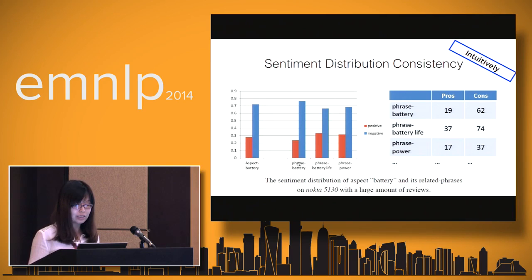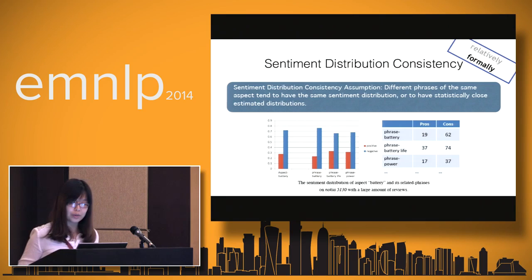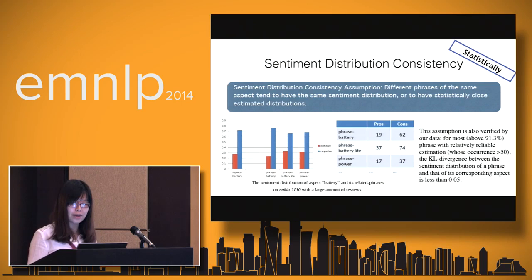This is reasonable, because if a battery is good, most people will say it's good no matter what phrase they use. So here is our assumption: different phrases of the same aspect tend to have the same sentiment distribution — or statistically close sentiment estimated distributions, because we can only get samples here. Our distribution is actually an estimated distribution, and we can only ensure they are statistically close, not exactly the same.